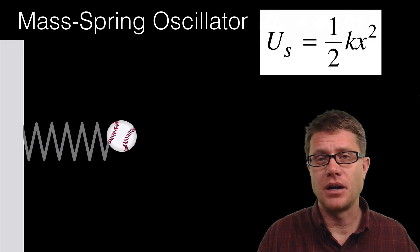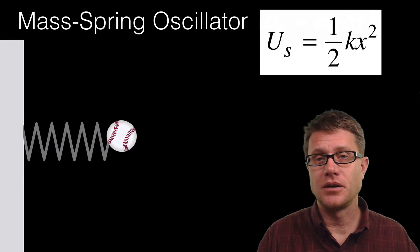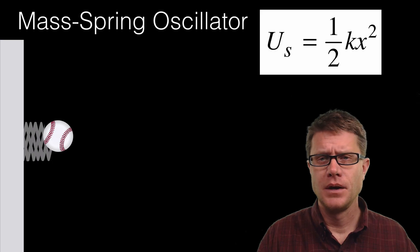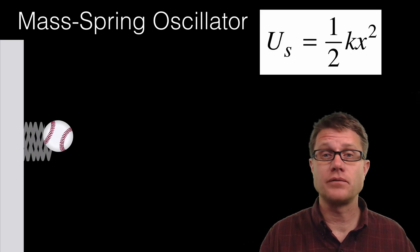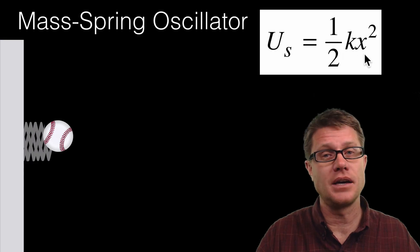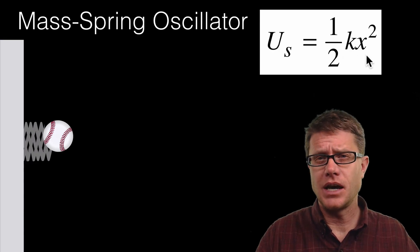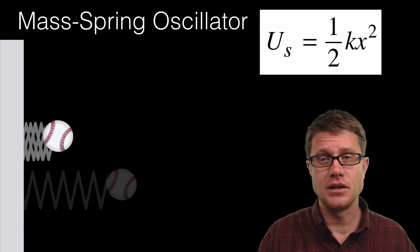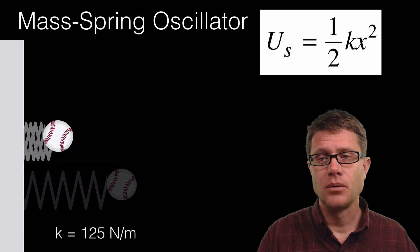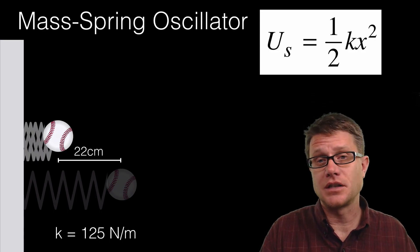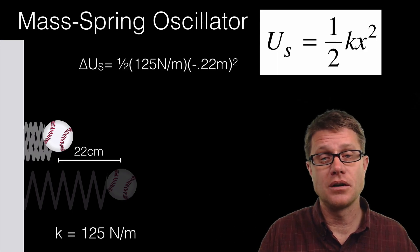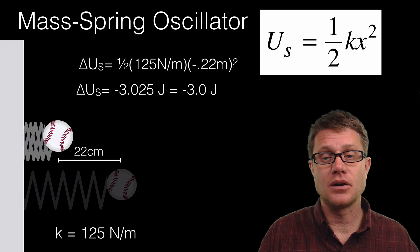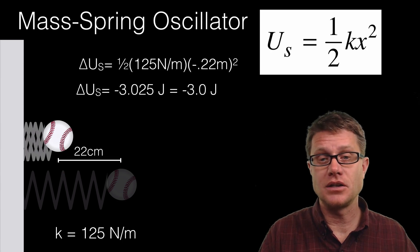This also applies to a mass spring oscillator. I have got a baseball here attached to a spring, and I am going to push it in like that. Now is that a conservative force? If I let it go, am I going to get some of that energy back? For sure. There is a different equation for that: one half kx squared. What is k? That is going to be the spring constant. We will say that is 125 newtons per meter. What is going to be our x value? It is the displacement, how far we move it. That is 22 centimeters, or we could say that is 0.22 meters.